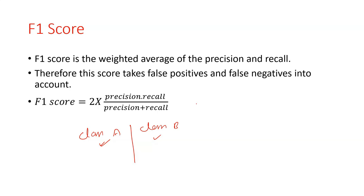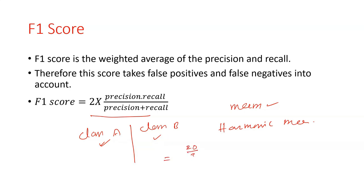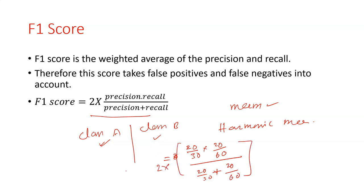The F1 score is computed using the harmonic mean — not the arithmetic mean — of precision and recall. The formula is: F1 = 2 × (precision × recall) / (precision + recall). Using our earlier example, precision is 20/30 and recall is 20/60, so F1 = 2 × (20/30) × (20/60) divided by (20/30 + 20/60), which gives the final F1 score.